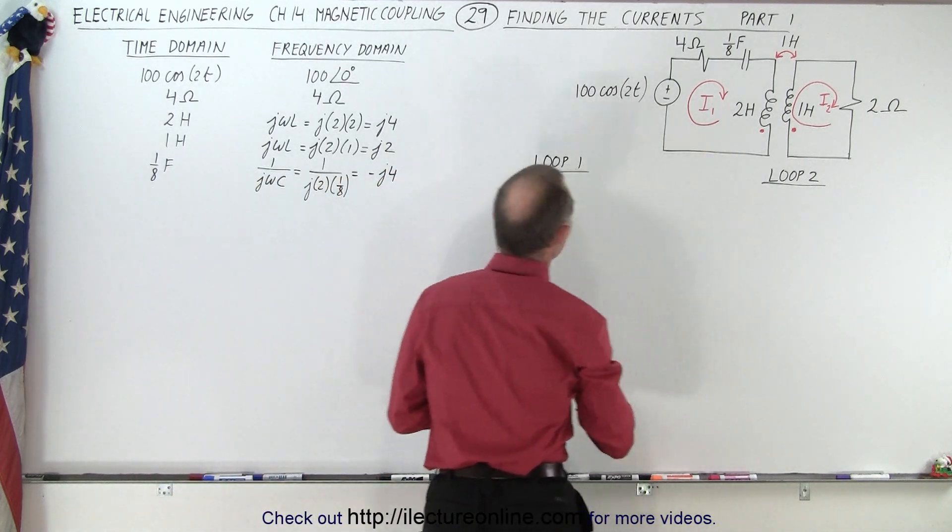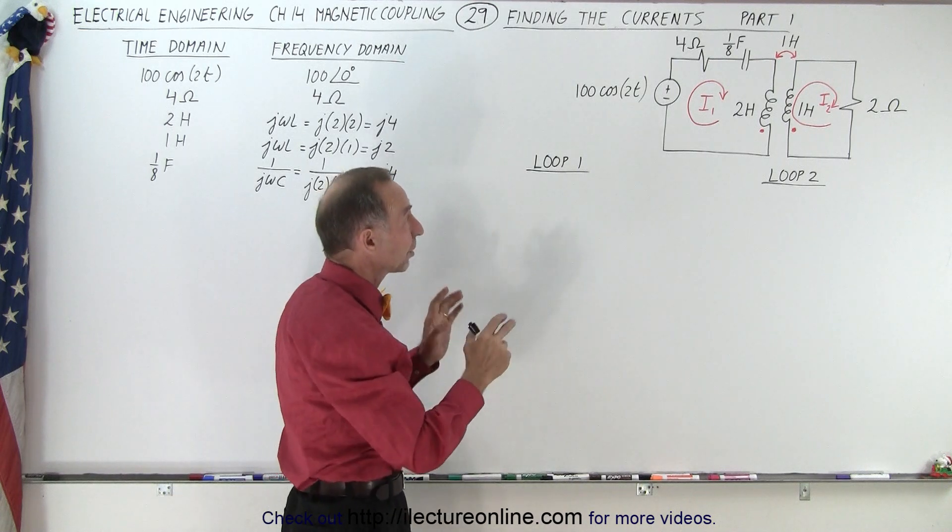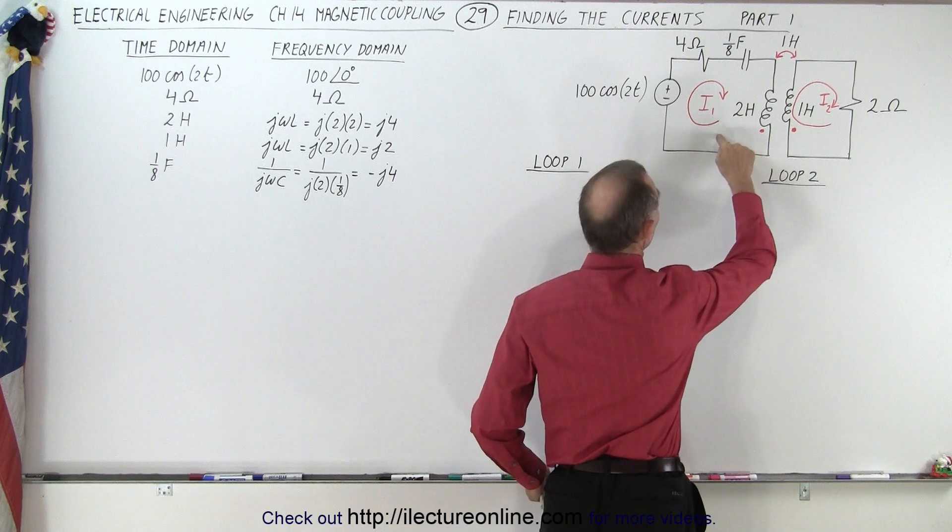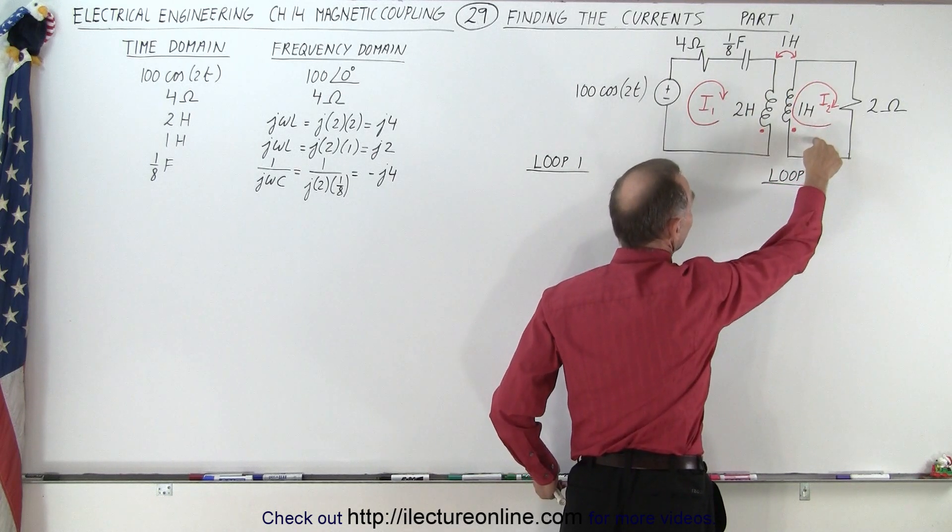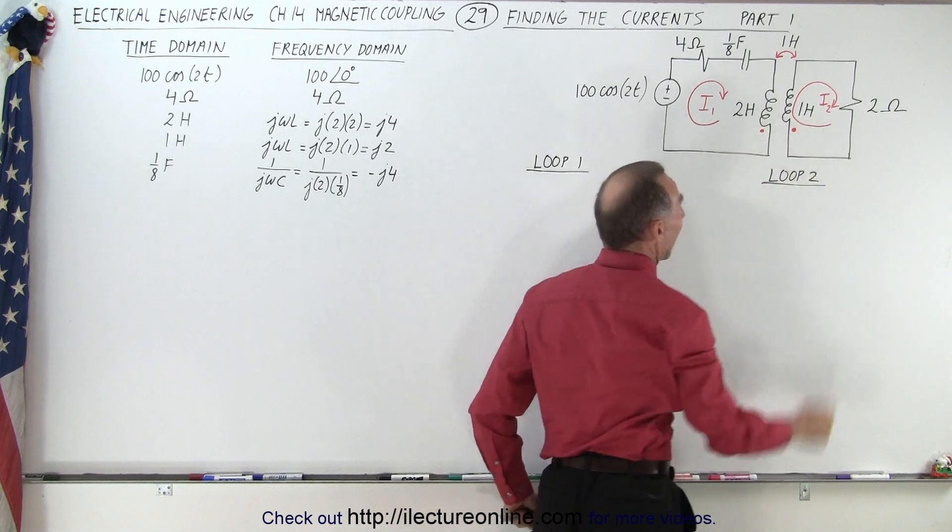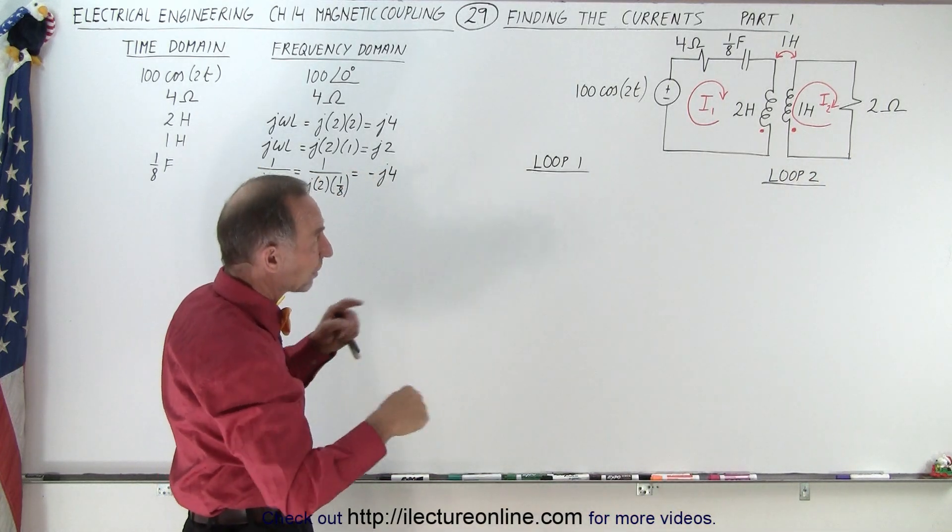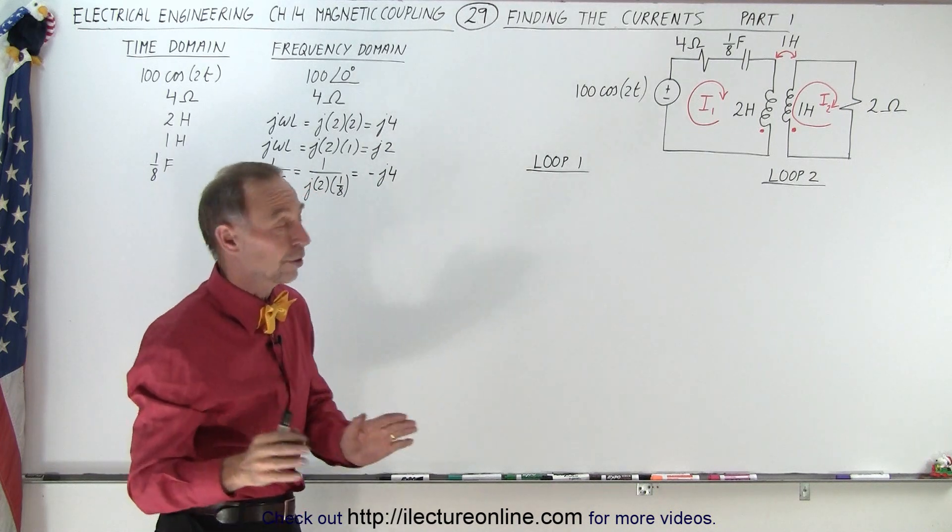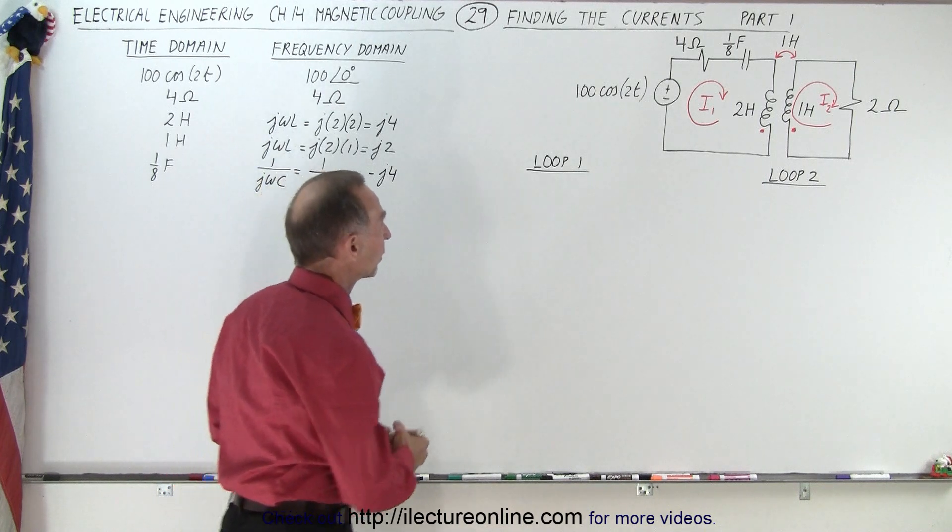We're going to go around loop one and the reason why we want to show several examples of course is because the nuances are a little bit different. Notice that in this case the current enters the inductor on the other side of the dot and on the right side, on the right loop, it enters at the dot. So here we have the opposite, the current enters the inductors at the opposite ends relative to one another. And so now you'll see how that affects the way we set up the equations.